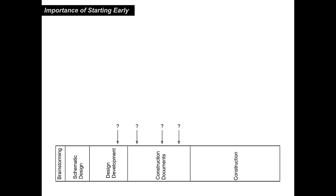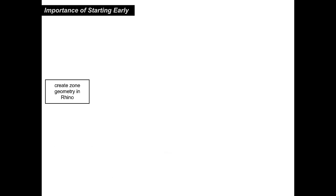Why is it important to start early, after you've gotten ideas but while you still have enough time? What happens when you try to energy model? First, you've got your zone geometry that you create in Rhino — the geometry of your buildings and these rooms, which are zones. You'll assign all these zone properties like constructions, schedules, the amount of lighting and people in the space using Honeybee. Then you'll change all the properties from the defaults to reflect what you will build. And then after you've got that, you're ready to run the model, load, and visualize the results.